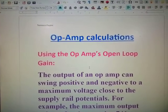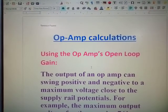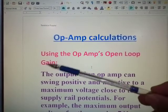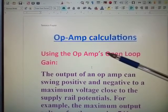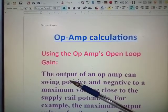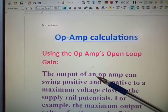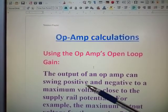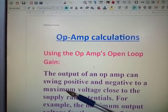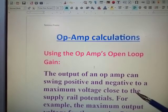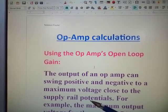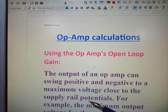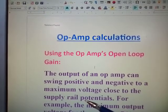So what I want to go for now is op-amp calculations, using the op-amp's open loop gain. Now the output of an op-amp can swing positive and negative to a maximum voltage close to the supply rail potentials. What that's saying is that it will operate at the potential of the voltage that has been applied to your supply rail.